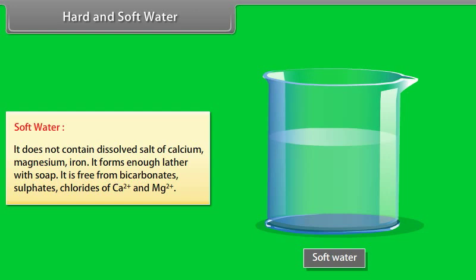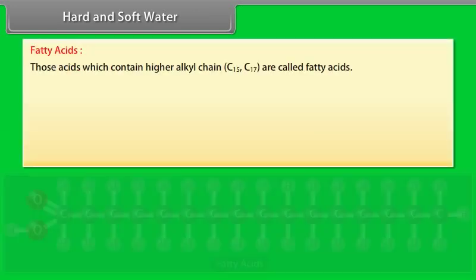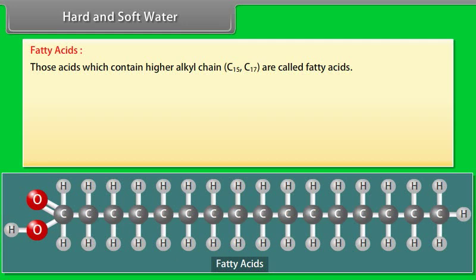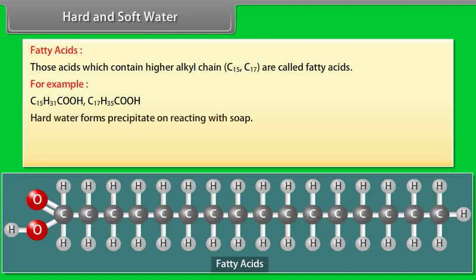Fatty acids: Those acids which contain higher alkyl chain are called fatty acids, for example, C15H31COOH and C17H35COOH. Hard water forms precipitate on reacting with soap.